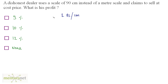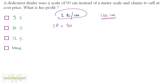So the cost at which he buys any material measured using this scale is 1 times 90, so cost price is 90. But to the user, he says that this is a meter scale — 100 centimeters. So to the person he sells to, he claims it is a 100-centimeter scale, meaning he sells at 100 rupees.